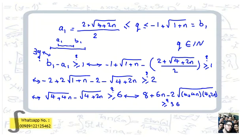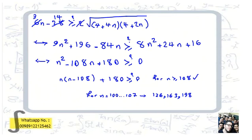To show B₁ − A₁ ≥ 1, we multiply through and need to prove 2√(1+n) − 2√(4+2n) ≥ 6 after rearranging, then raise both sides to the power of 2: 4+4n + 4+2n − 2·(cross terms) ≥ 36. Moving terms across gives 6n − 28 ≥ 2·(cross product term), and dividing by 2 yields 3n − 14 ≥ the remaining square root expression.